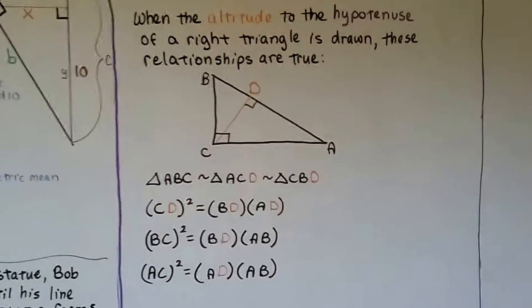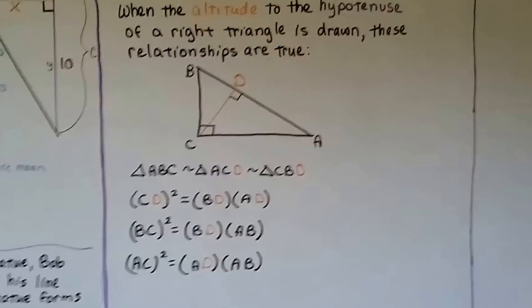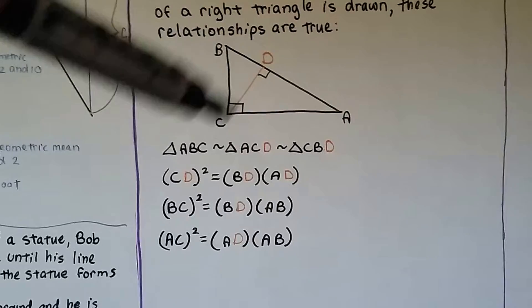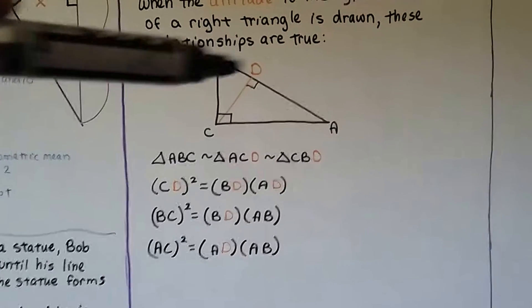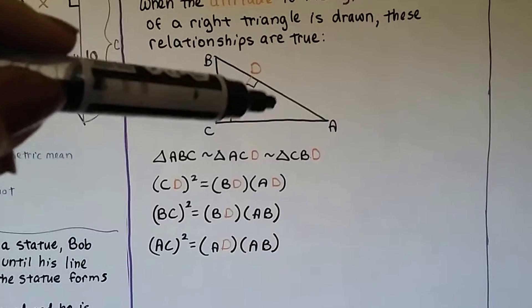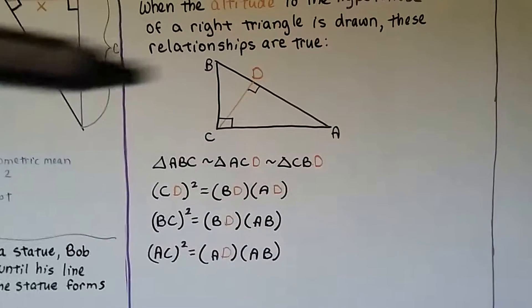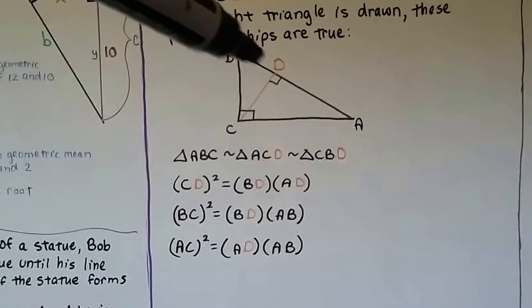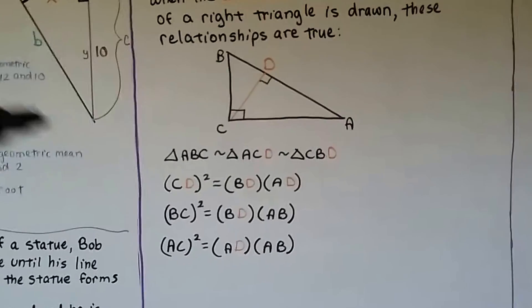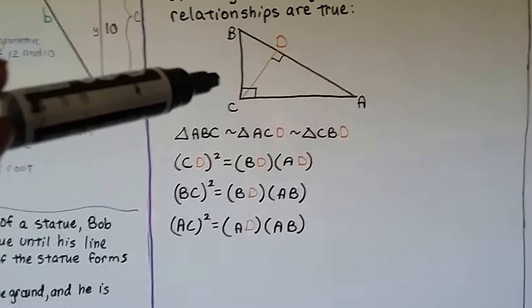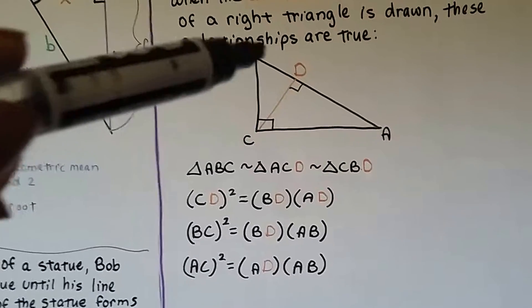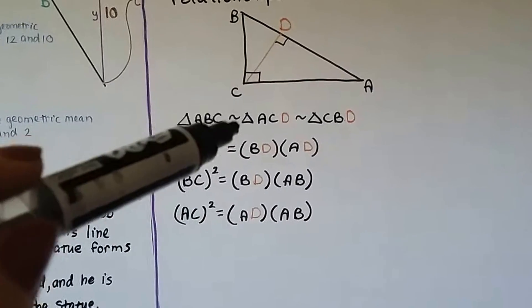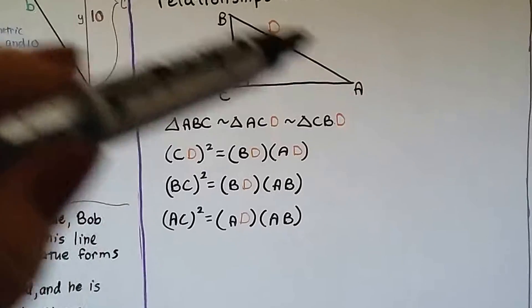When the altitude to the hypotenuse of a right triangle is drawn, these relationships hold: triangle ABC is similar to triangle ACD, which is similar to triangle CBD. CD squared equals BD times AD. BC squared equals BD times AB. And AC squared equals AD times AB.